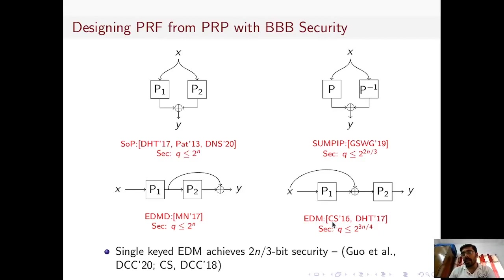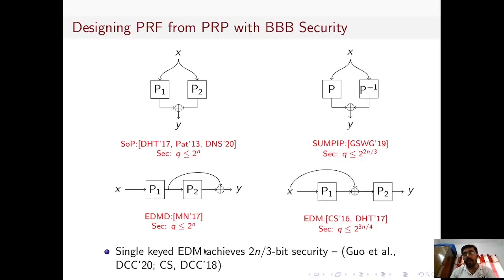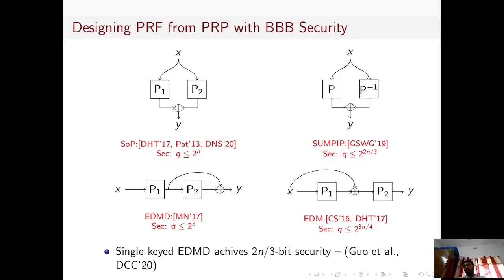In Crypto-16, Cogliati and Seurin proposed their construction, which we call the Encrypted Davies-Meyer construction. This is similar to the EDMD construction and is based on two independent permutations P1 and P2. This construction has been proven to be secure up to 2^{3n/4} queries. The single-key variant of the EDM construction achieves 2n/3-bit security. Similarly, the single-key EDMD construction achieves 2n/3-bit security.